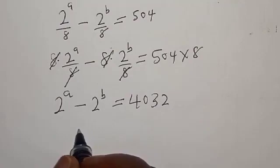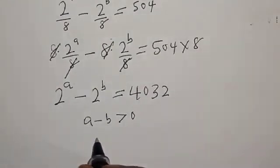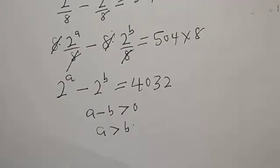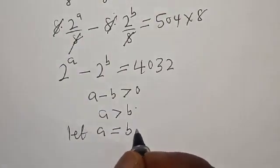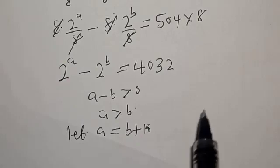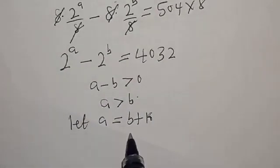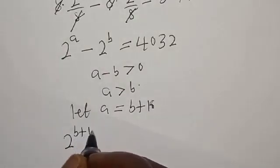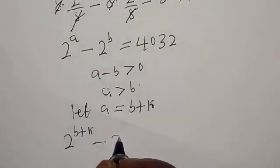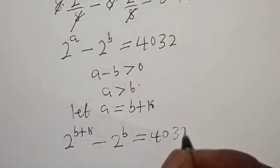Remember that a minus b is greater than 0, therefore a is greater than b. We let a equal to b plus k. Since a and b are positive integers, anywhere you see a, you put b plus k there. Then we have 2 raised to power b plus k minus 2 raised to power b equal to 40.